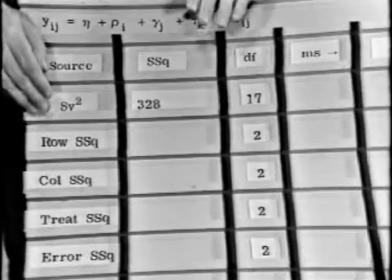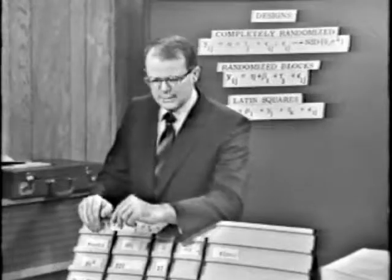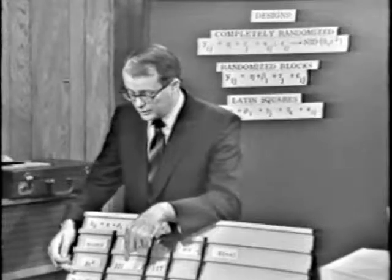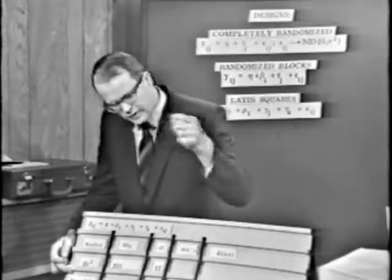All right, now we have to calculate the row sum of squares and the column sum of squares and the treatment sum of squares. How are we going to go about that? Well, one way you get the row sum of squares is estimate the row effects, and then take the squares of all those little row effects, and that will give you the proper entry for the table.